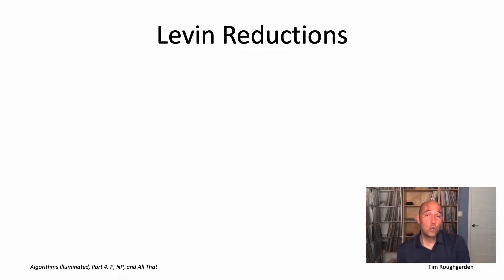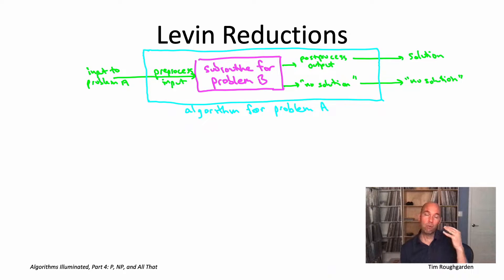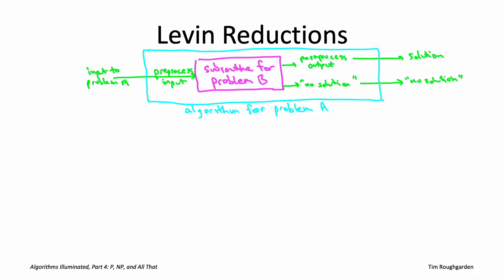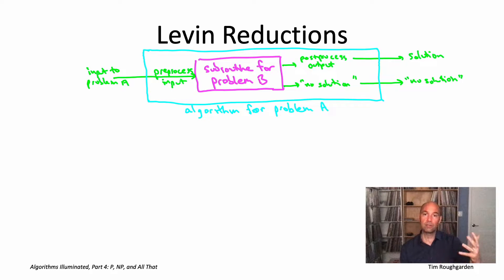Let's redraw our usual cartoon to reflect the new restrictions imposed by a Levin reduction. Levin reductions only make sense for a pair of search problems — reducing some search problem A to some other search problem B, like 3SAT and the search version of TSP. As usual, we imagine we're given an efficient subroutine solving problem B, the problem we're trying to prove is hard (the magenta box), and the reduction builds the light blue box to show how to use that magenta box to solve problem A as well.